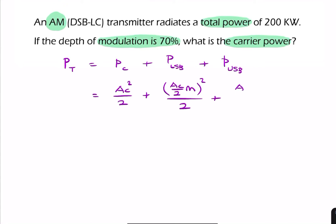And similarly, for the upper sideband, we have AC divided by 2 times M squared divided by 2. That is our total power.